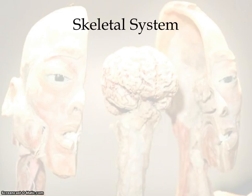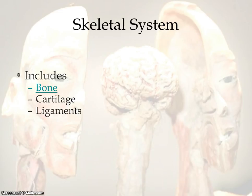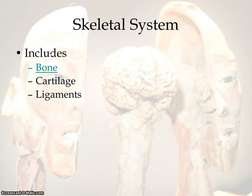In this part of the body system unit, we're going to be looking at the next group. We're going to focus on the skeletal system. The skeletal system is going to include not only the bones, but also the cartilage and ligaments that help hold those bones together and cushion the movement of those bones. This is actually going to tie into the next system we'll look at as well.